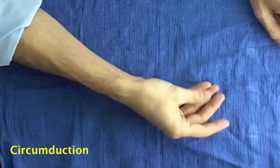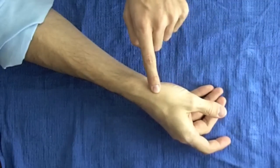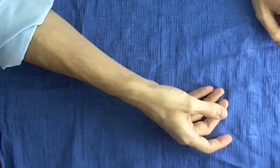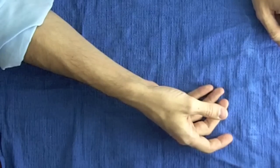Circumduction is the technical term for moving around in a circle. This motion occurs at the carpometacarpal joint of the thumb at the thumb base. This joint is commonly affected by arthritis.